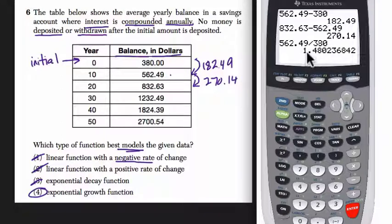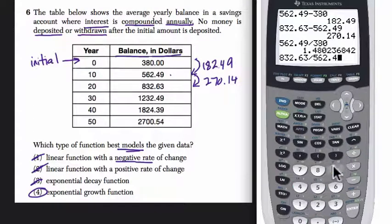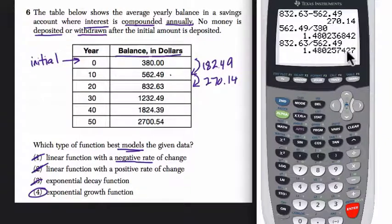So that would be about the interest rate over the first 10 years. And then if we divide 832.63 by 562.49, notice we get a really close interest rate. It's not exactly the same, slightly different here, 5 and 3, 7 and 6, but it's very close. And as you go down and divide, you'll notice that all of the interest rates are very close. So this number, this 1.48, is the approximate interest rate that we're getting. So we could model this with an exponential growth function that has a scale factor of about 1.48.